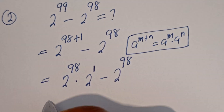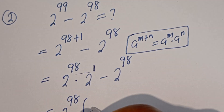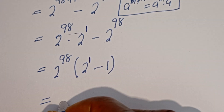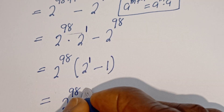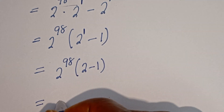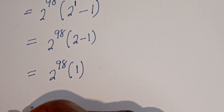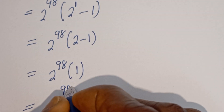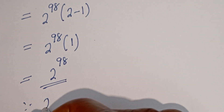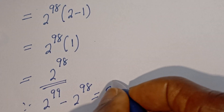We can see that 2 to the power of 98 is common. This is 2 to the power of 98 bracket. If you divide this by this, we have 2 to the power of 1 minus 1. Then this is equal to 2 to the power of 98 bracket, 2 minus 1, which is 1. Then this is equal to 2 to the power of 98. Therefore, 2 to the power of 99 minus 2 to the power of 98 is equal to 2 to the power of 98.